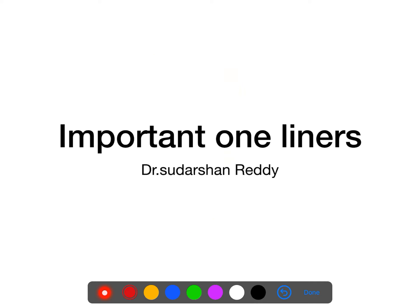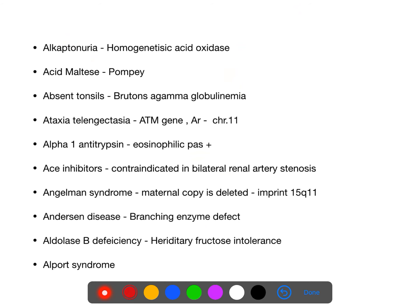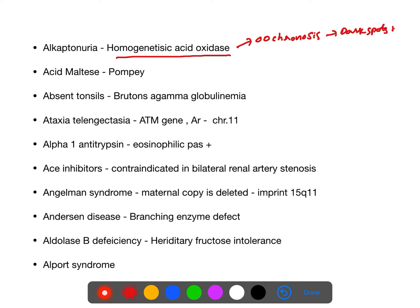Alkaptonuria: the defect is homogentisic acid oxidase deficiency. Features include ochronosis (dark spots on ear cartilage), arthritis, and darkening of urine on long-standing. So remember: ochronosis, arthritis, darkening of urine, homogentisic acid oxidase defect.